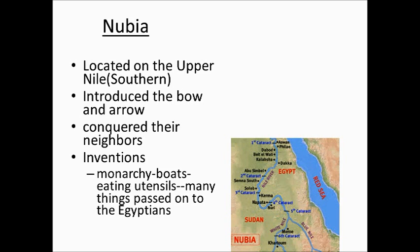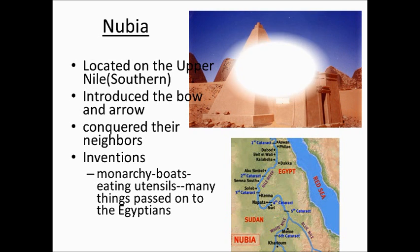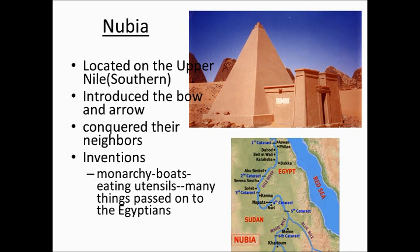Nubian inventions include things like monarchy, boats, and eating utensils — we might still be eating spaghetti with our hands if it wasn't for the Nubians. Many of these things were passed on to the Egyptians, including the idea of pyramids. Although the one shown here is a little miniature one.